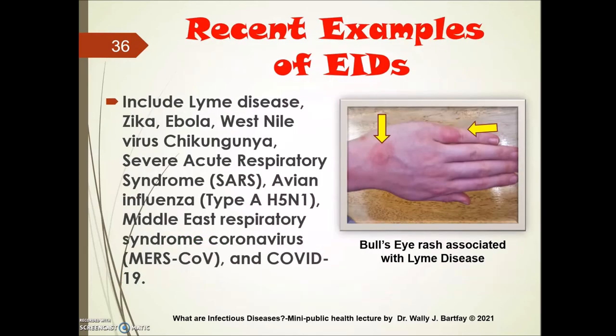Recent examples of EIDs include Lyme disease, Zika, Ebola, West Nile, SARS, avian influenza, MERS — Middle Eastern Respiratory Syndrome — and of course COVID-19. In this picture you see a photo of a hand showing the bull's-eye rash associated with Lyme disease following a tick bite.